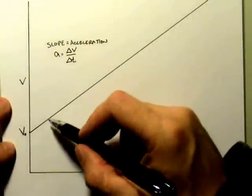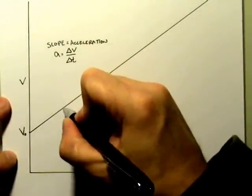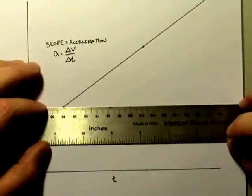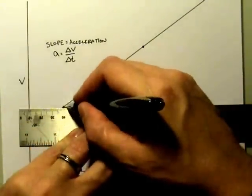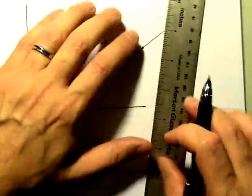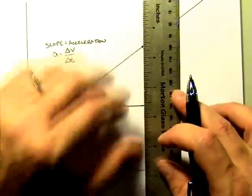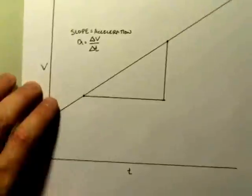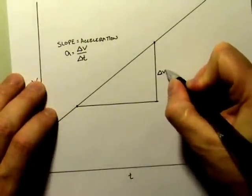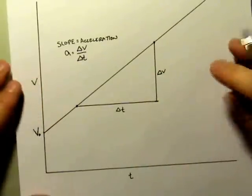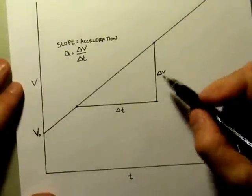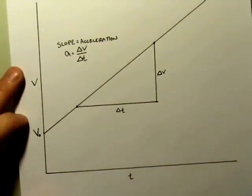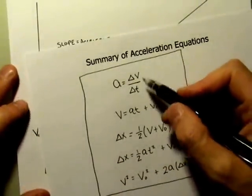The slope of the VT graph is the acceleration of the object — I'll be looking at a change in V over a change in T. For example, I might pick two points on the line. On one axis I have ΔV, and on the other I have ΔT. By calculating the change in velocity over the change in time, I can figure out the acceleration. This was the definition of acceleration: change in V over change in T.